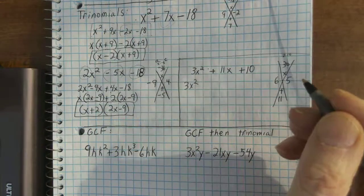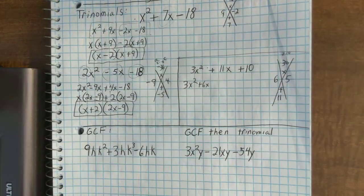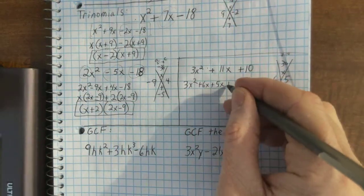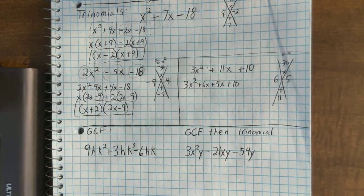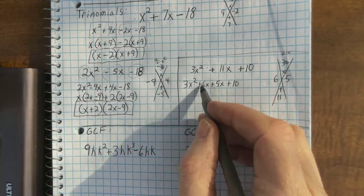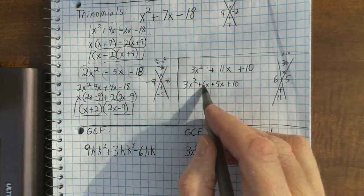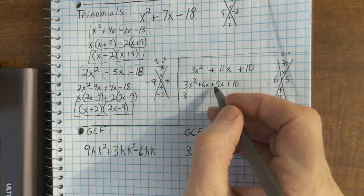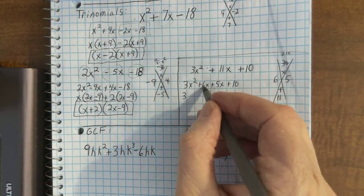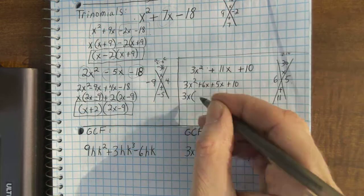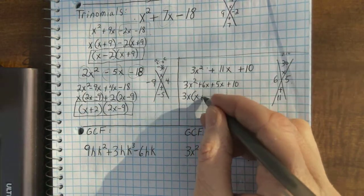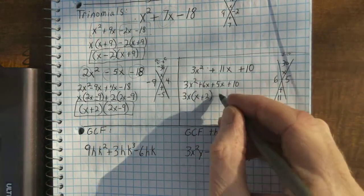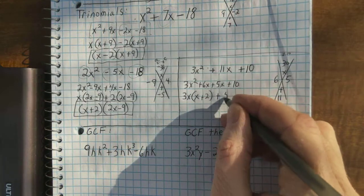So, I have 3x squared plus 6x plus 5x plus 10. All right. That's how the 6x plus 5x is used to split up the middle term 11x. Now, let's see what happens. 3 goes into 3x squared and 6x or 6. And they each have an x too. So, I'm going to put that and I'll have x here and plus 2 here. 3x times x is 3x squared. 3x times 2 is 6x.